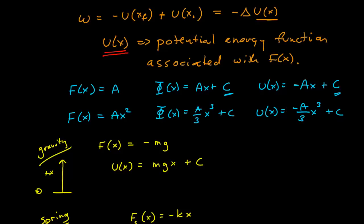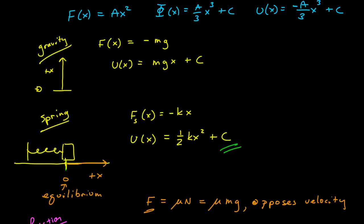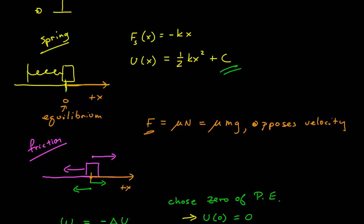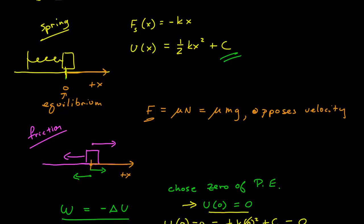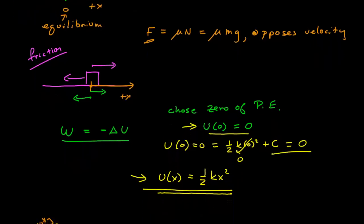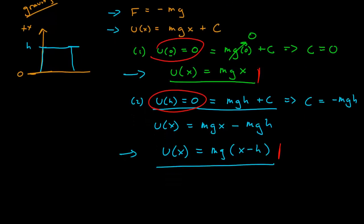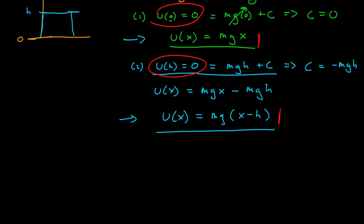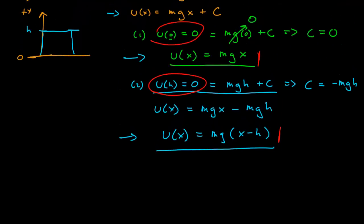We didn't particularly give a reason why we would want to do that, except that we could, given that the force was only defined as a function of position. We did that for gravity and spring, identifying that to come up with a proper mathematical representation we had to define a coordinate system, choose a zero of the coordinate system, as well as choose a location for the zero of potential energy — because only differences in potential energy have physical meaning. Now I want to come up with a more general mathematical representation of the potential energy function.